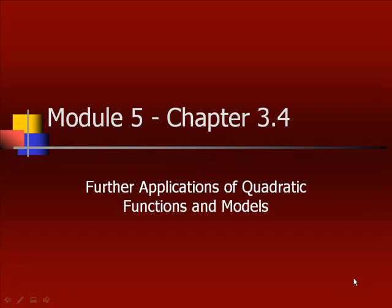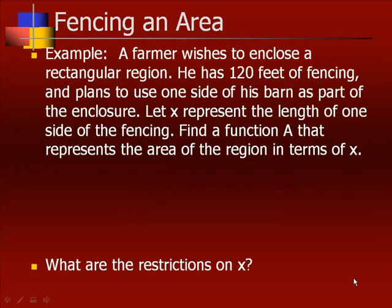Module 5 Chapter 3.4 Further Applications of Quadratic Functions and Models. Our first example: a farmer wishes to enclose a rectangular region. He has 120 feet of fencing and plans to use one side of his barn as part of the enclosure. Let X represent the length of one side of the fencing. Find a function A that represents the area of the region in terms of X.